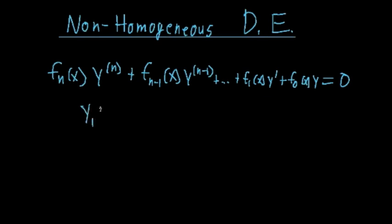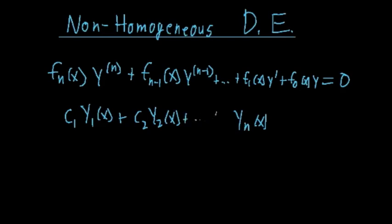We can label those solutions y_1(x), y_2(x), all the way up to y_n(x). If we take a linear combination — c_1 times y_1, plus c_2 times y_2, all the way up to c_n times y_n, where these c's are arbitrary constants — the linear combination of solutions is also a solution. In fact, we call it the general solution, and I'll denote it as y_h.